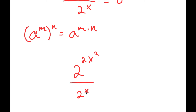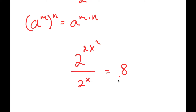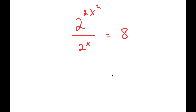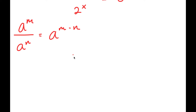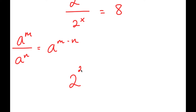Now, this over 2 to the power of x is equal to 8. If I have something in the form a to the power of m over a to the power of n, this is equal to a to the power of m minus n. So 2 to the power of 2x squared over 2 to the power of x is going to equal 2 to the power of 2x squared minus x, and this is equal to 8.